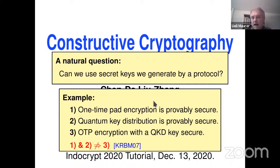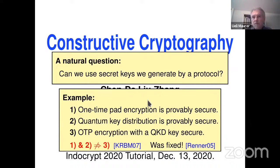I asked: is it true that statements one and two imply three? I asked this question to Renato and, to our surprise, it turned out the answer is no. This implication doesn't hold. Something must be fundamentally flawed if we cannot conclude three from these two important statements in our field — there is no composition in the natural sense. This was in the early 2000s; it was cleaned up by new security definitions and a new framework for quantum key distribution by Renato Renno, so today we know how to do it.